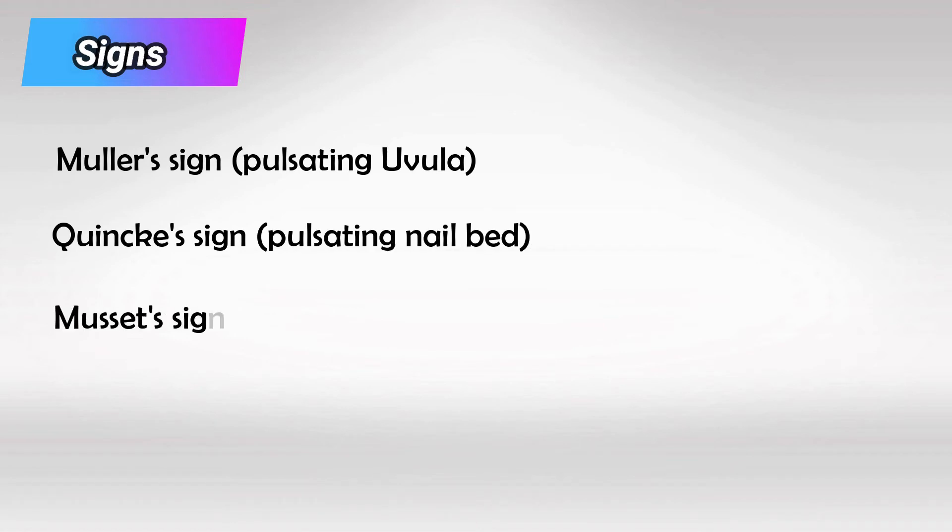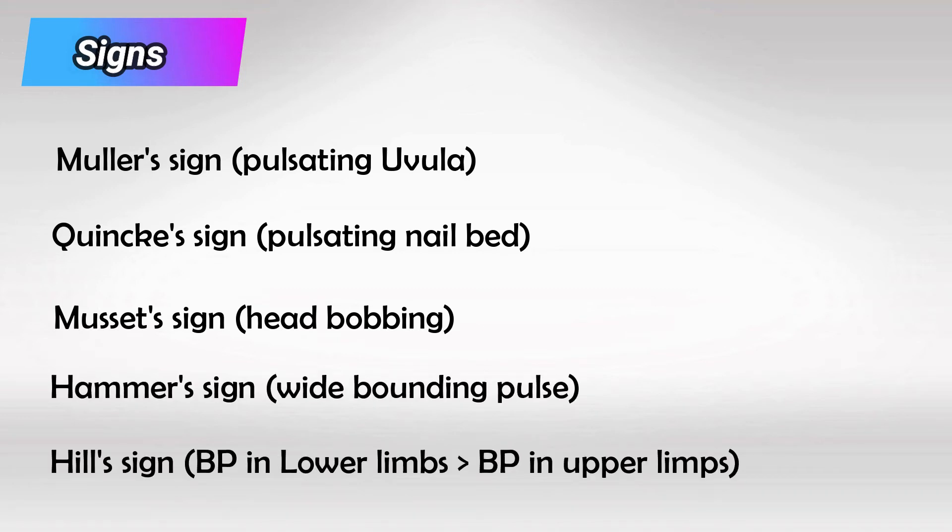This gives us five signs that we can look for. Exam makers love to ask about these signs. Muller's sign which is a pulsating uvula, Quincke's sign which are pulsating nail beds, Musset's sign which is head bobbing, water hammer pulse which is wide bounding pulse, and Hill's sign which is high blood pressure in the lower limbs and low blood pressure in the upper limbs.